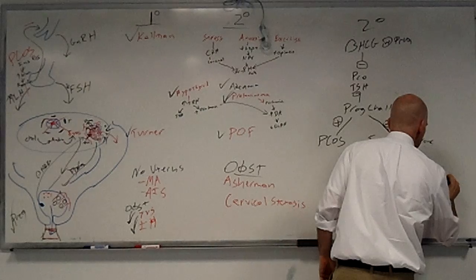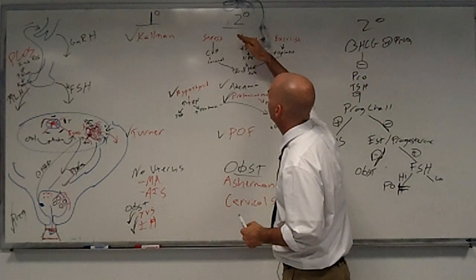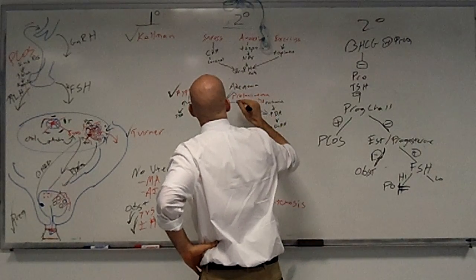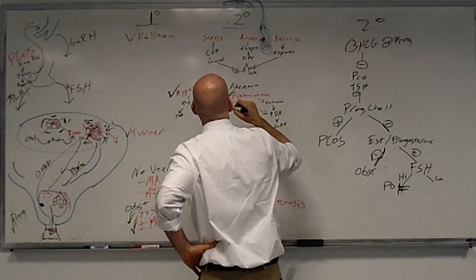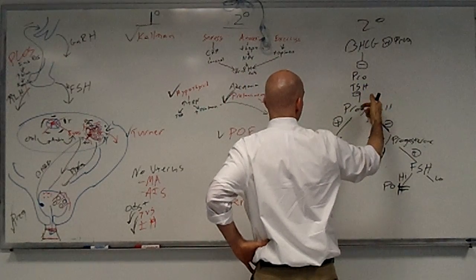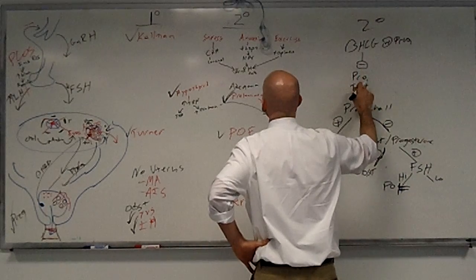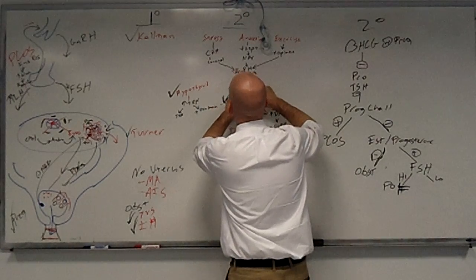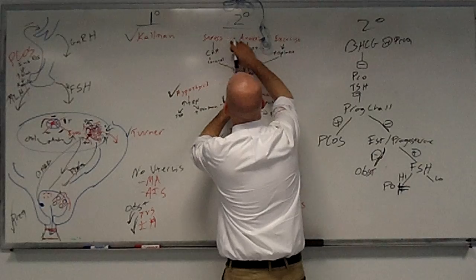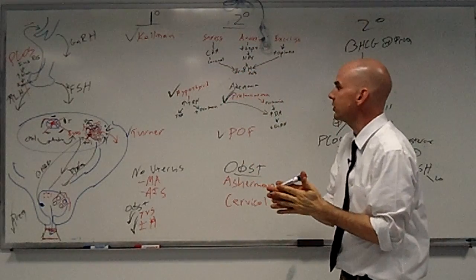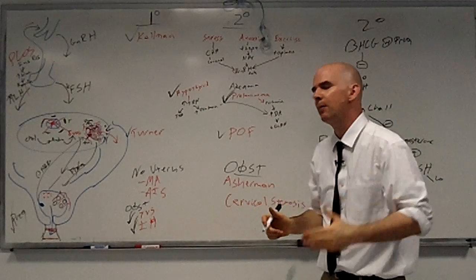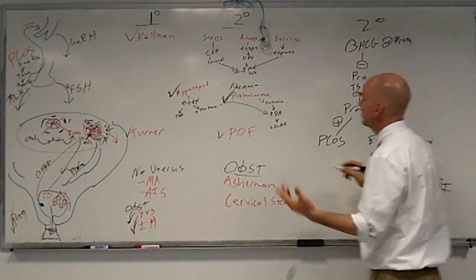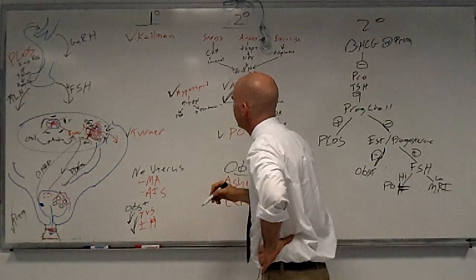If FSH is low, then we know that the problem is up here. And we've already eliminated hypothyroidism, and we've eliminated prolactinoma with our earlier tests for prolactin and TSH. So the only things that are remaining in the pituitary area is adenoma, and in the hypothalamus area is stress, anorexia, and exercise. How do we distinguish? We're going to do an MRI.